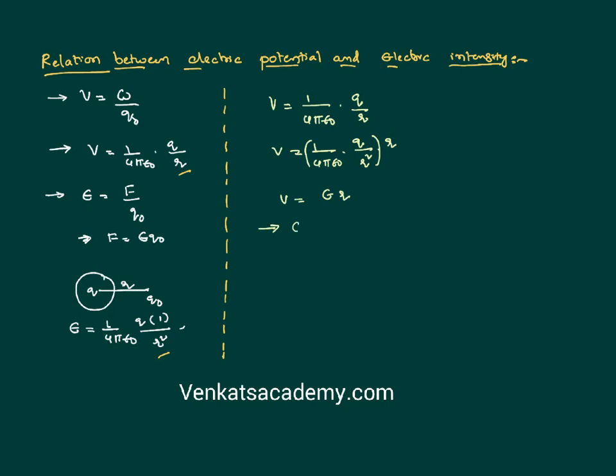Or you can write e as v by r or else something like v by d. It is further noticed that we are doing the potential or we are doing the work against the field, against the electric intensity of the field. Therefore, I can write e as minus dv by dr or minus dv by dx.